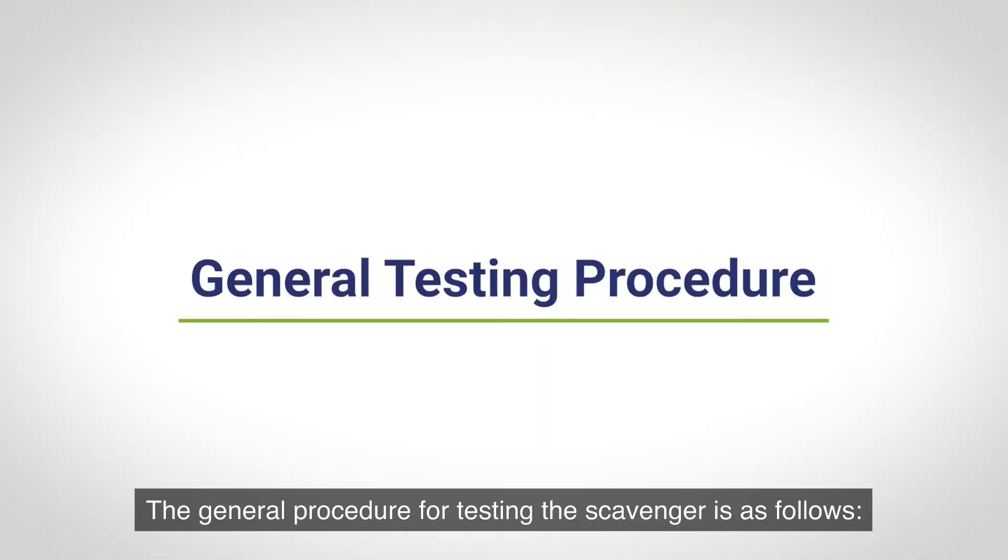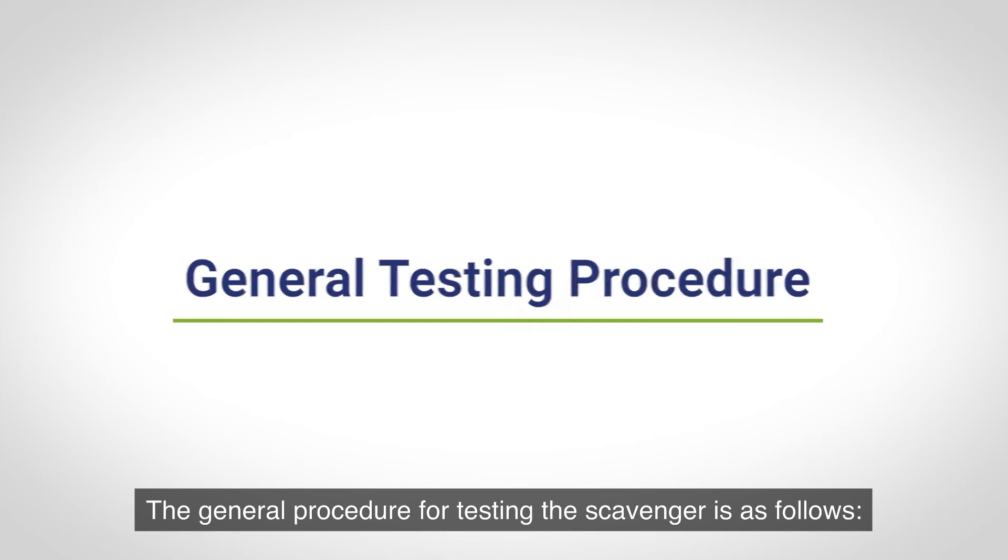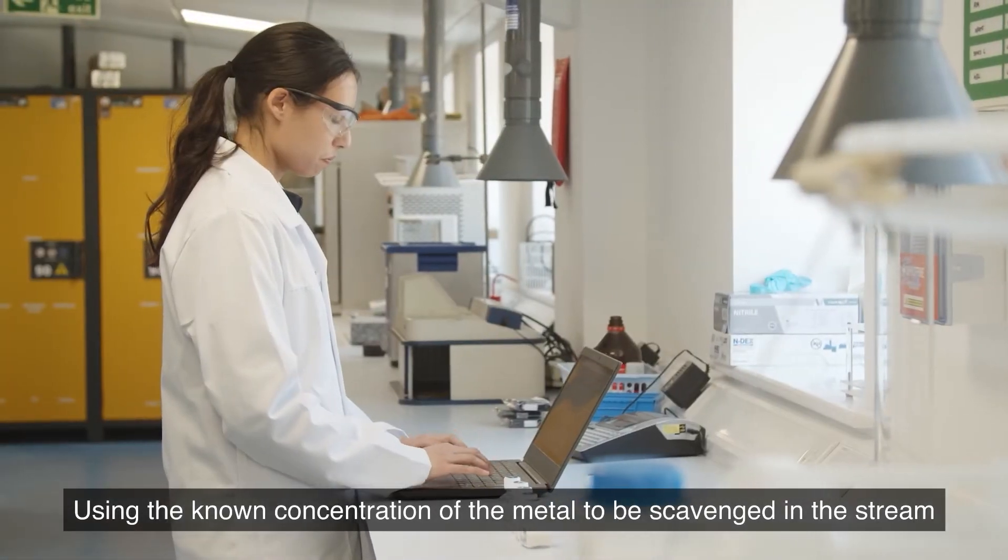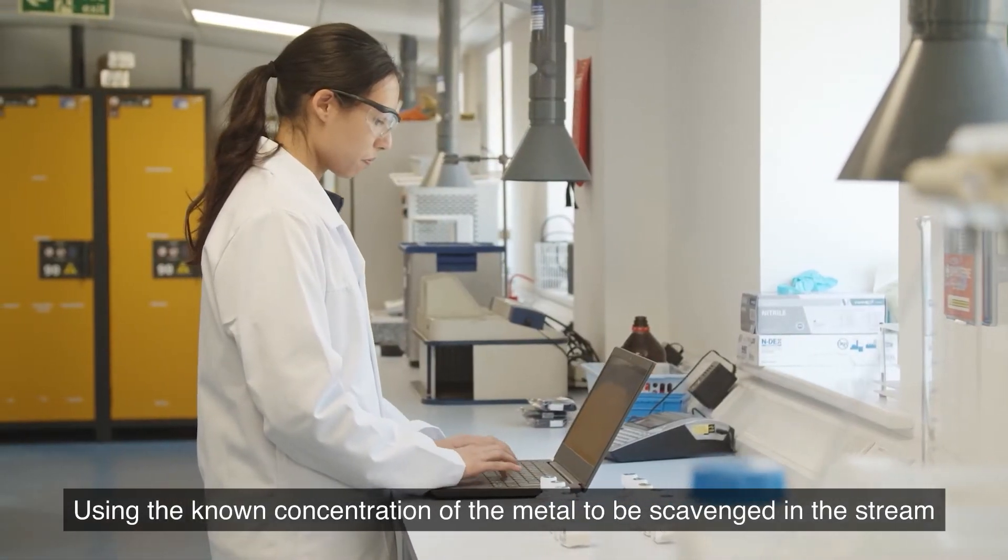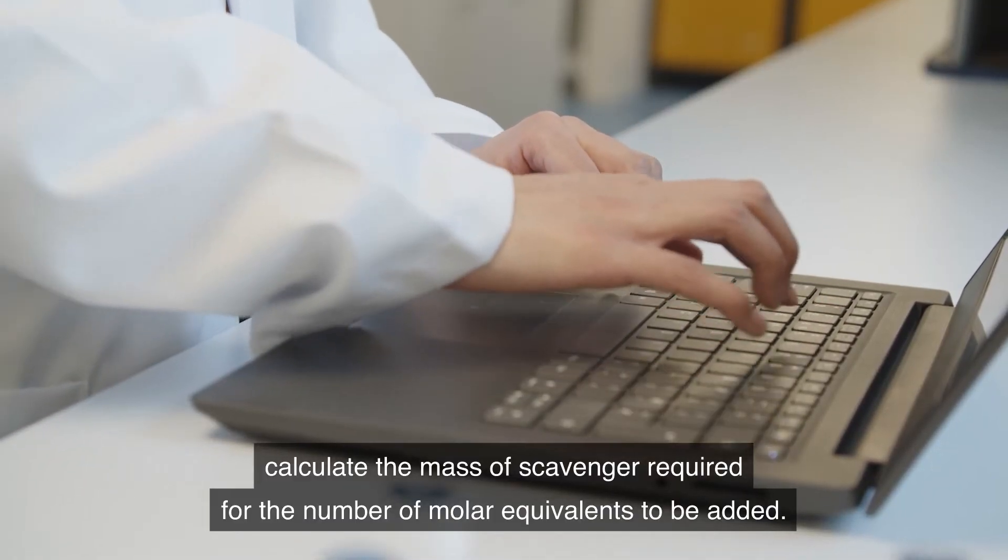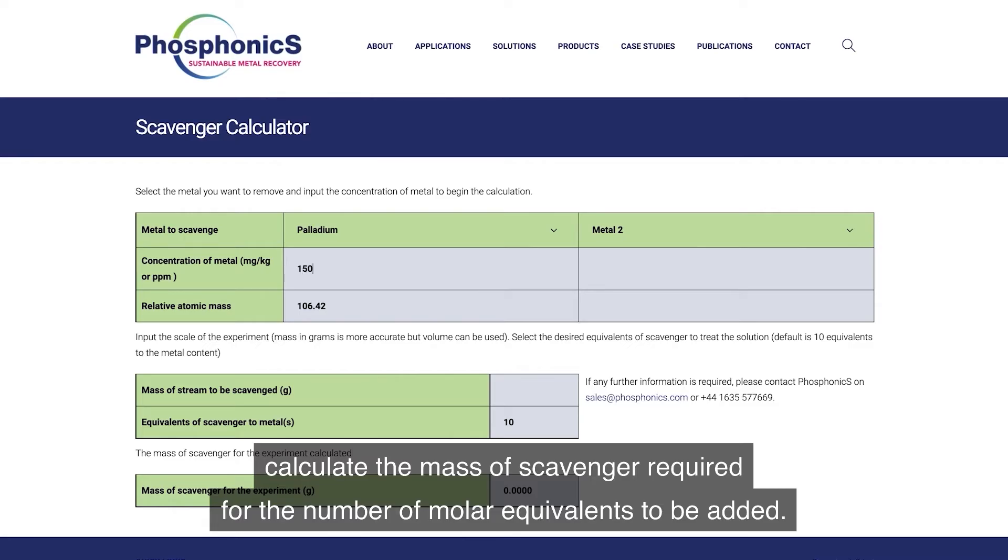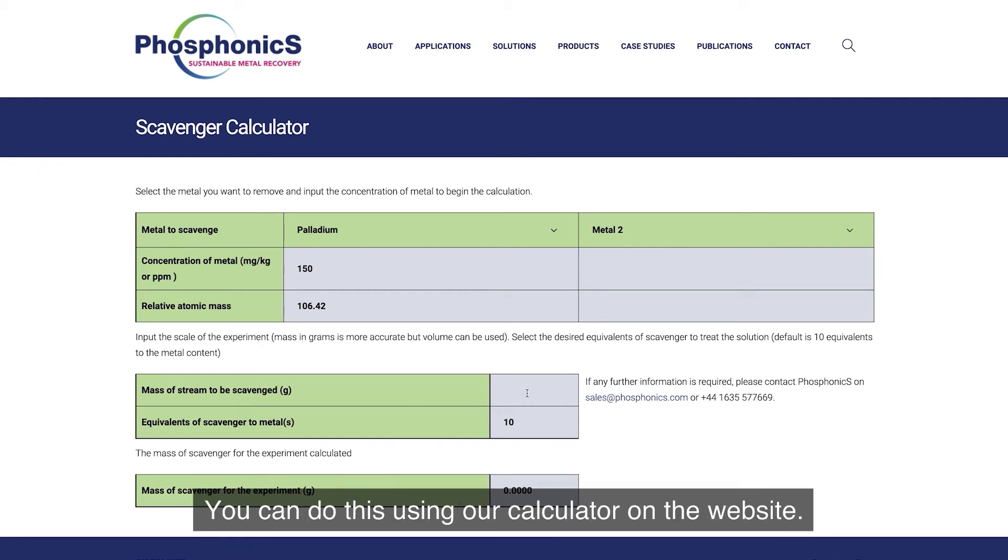The general procedure for testing the scavenger is as follows. Using the known concentration of the metal to be scavenged in the stream, calculate the mass of scavenger required for the number of molar equivalents to be added. You can do this using our calculator on the website.